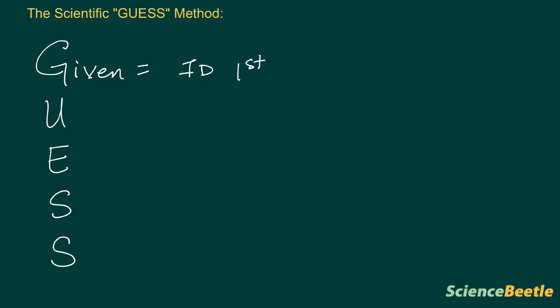When I say the given, this is what I'm referring to: this is going to be any data that's given to you, any data, any numbers that are given. You want to make sure that you get this identified early on. Typically what I do is I underline it in the problem.